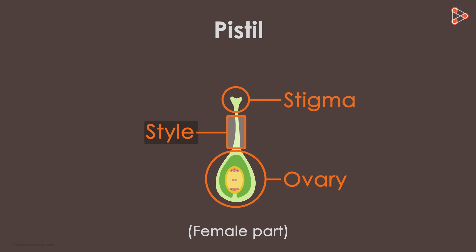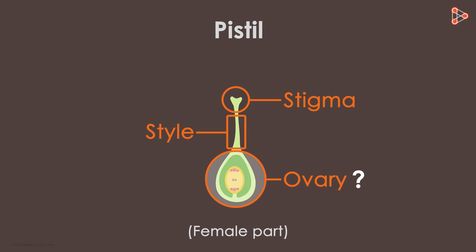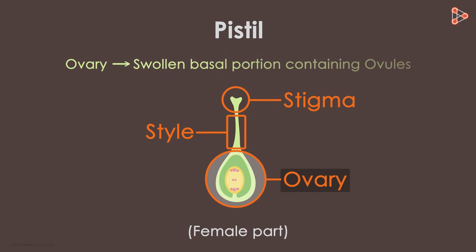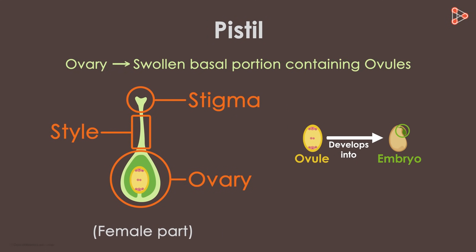Next comes the style, which is a slender stalk that holds up the stigma in position and connects it with the ovary. The ovary is the swollen basal part of the pistil which contains the ovules. Ovules are the female gametes that get fertilized and form the embryo.